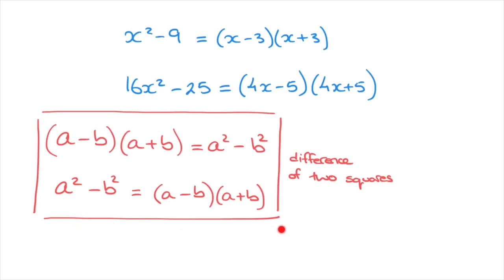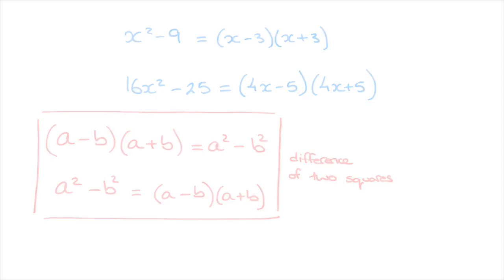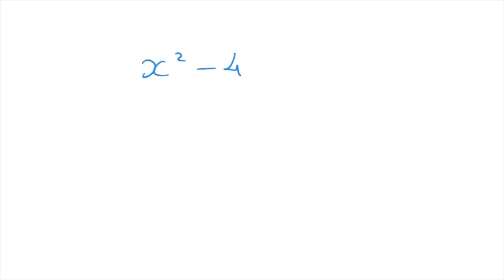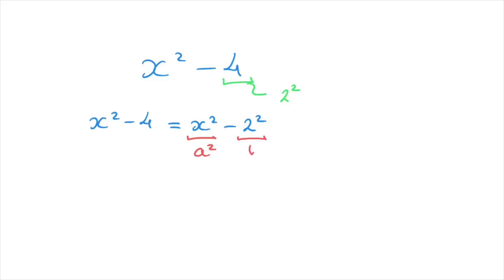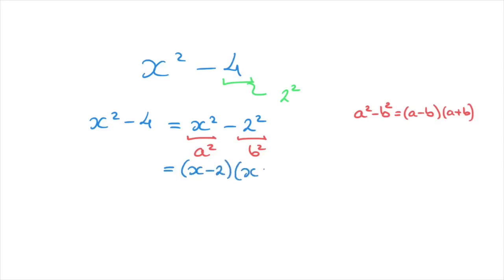Now let's see how the difference of two squares can be used to factorize quadratics. Say we're given x squared minus 4 and asked to write this in factored form. The key thing to notice is that 4 can be thought of as 2 squared. Consequently, x squared minus 4 equals x squared minus 2 squared. We can think of this as a squared minus b squared and use the formula to rewrite it as x minus 2 times x plus 2. We've just written this quadratic in its factored form.